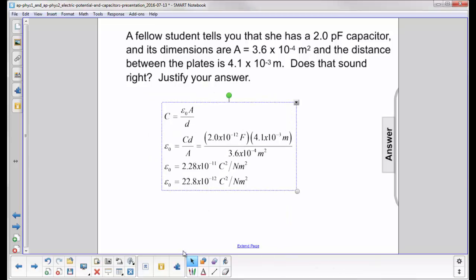Let's start with this. This is our equation for capacitance, epsilon 0 A over D, and let's see what we get for epsilon 0 if we substitute in the capacitance, the area, and the distance between the plates.